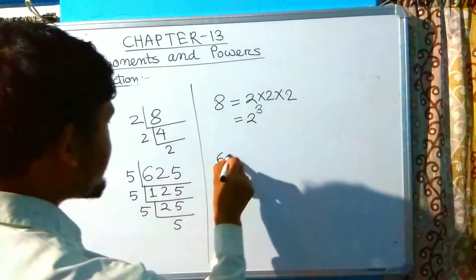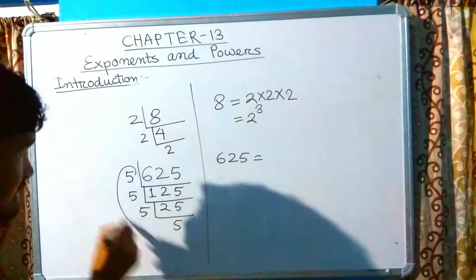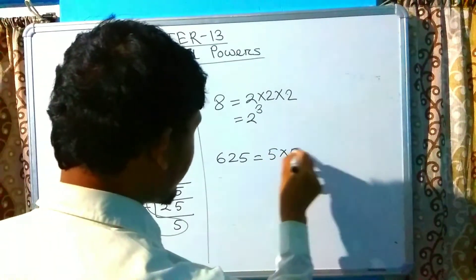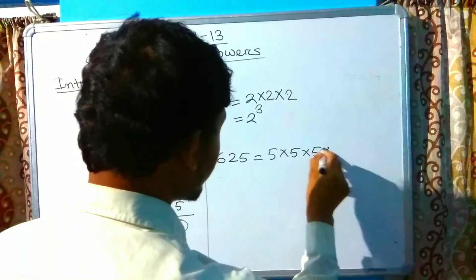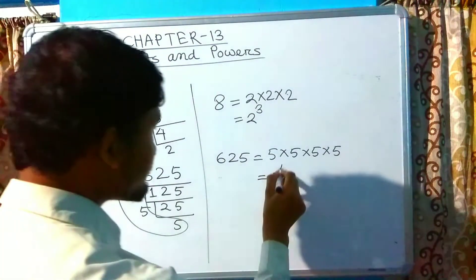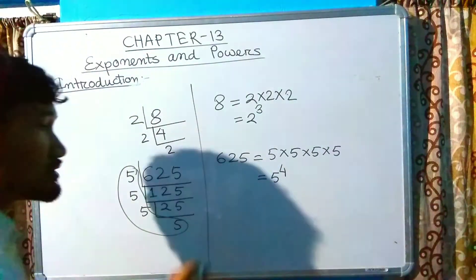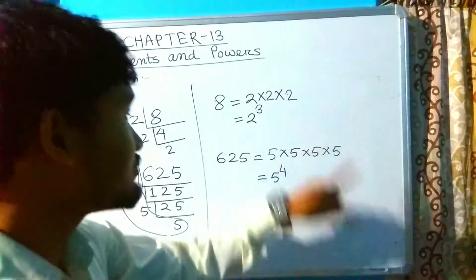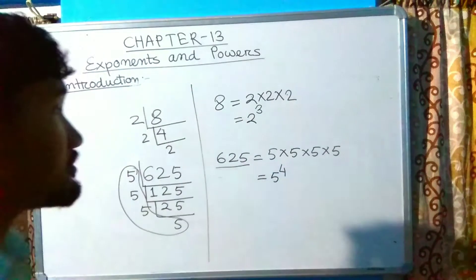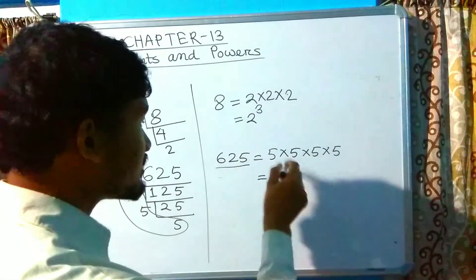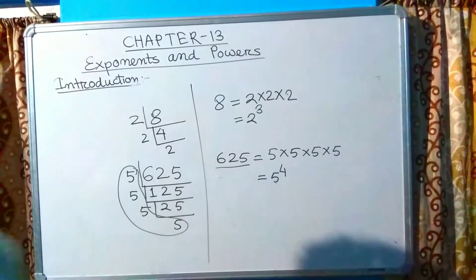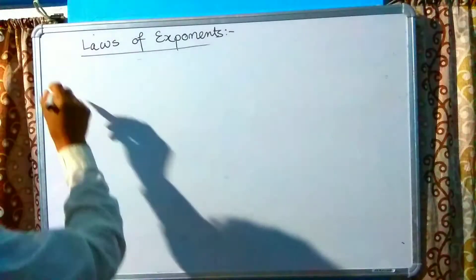The prime factors of 625 are 5, 5, 5, and 5. So 625 equals 5 multiplied by 5, multiplied by 5, multiplied by 5. Since there are four 5s, we write 5 raised to the power 4. So the exponent form of 625 is 5 raised to the power 4. Now I will discuss some laws of exponents.